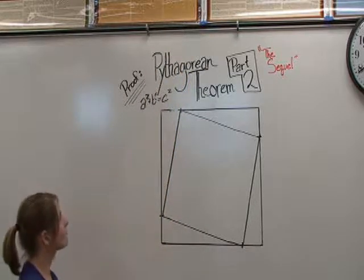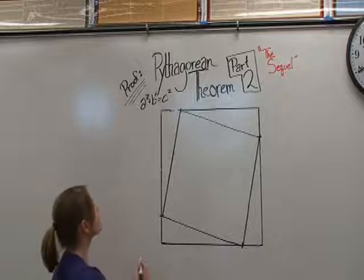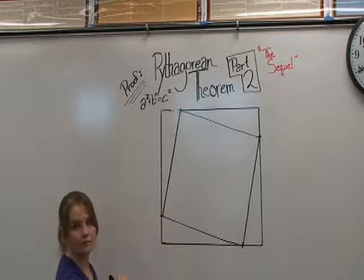Next, label A, B, and C. A being the shorter legs, B being the longer legs, and C being the hypotenuse of each triangle.